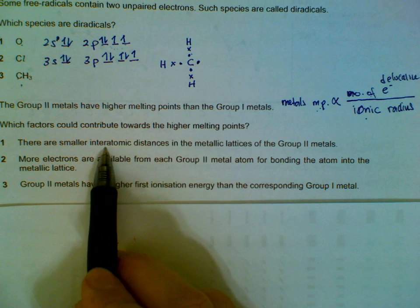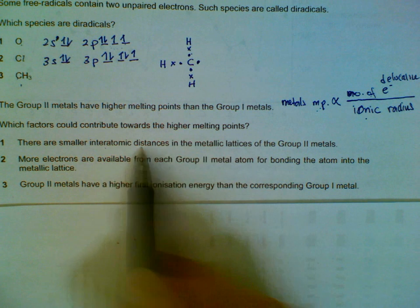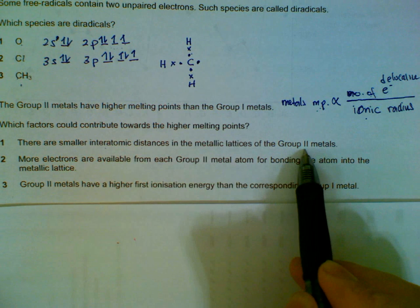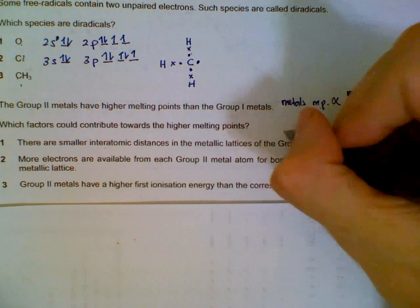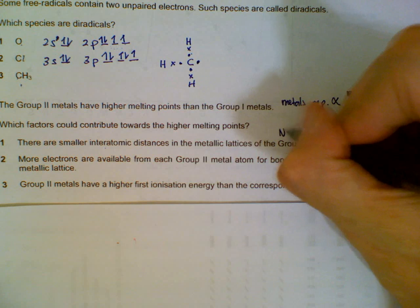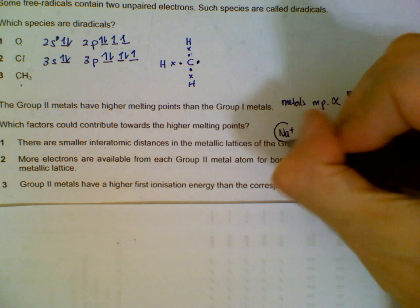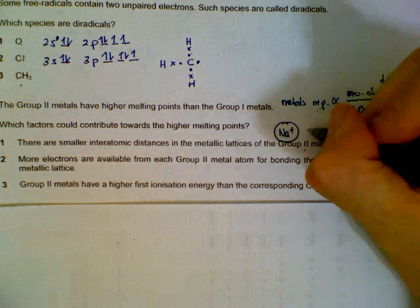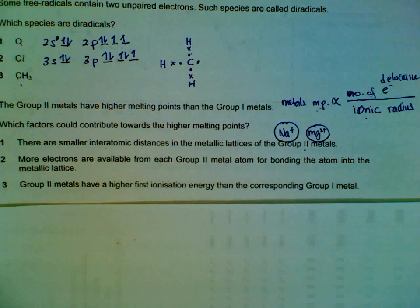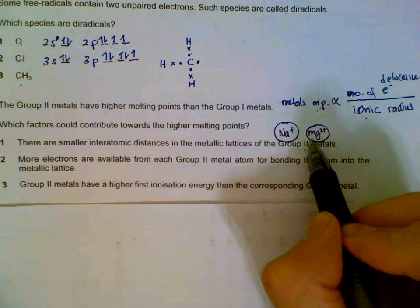Statement 1: Smaller interatomic distances in group 2. They are saying that group 2 is actually smaller ions than group 1, which is true. For example, we have sodium plus and then we have magnesium 2+ ion.